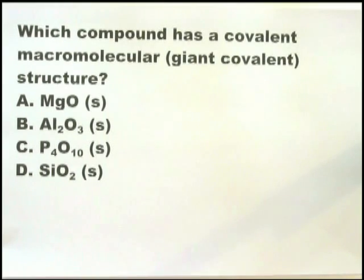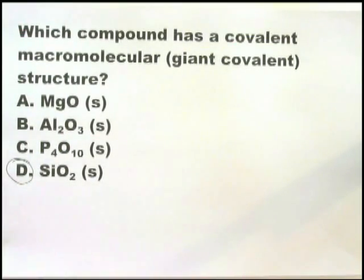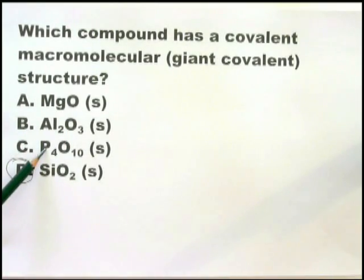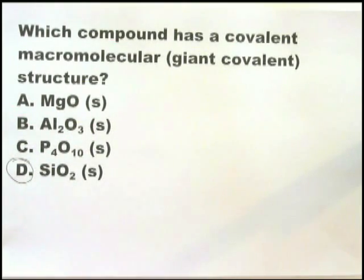When you look through these four options, you have to immediately realize that silicon dioxide is the giant covalent structure, or macromolecular structure. The others are ionic or simple covalent. There are a few structures you're expected to recognize immediately as covalent macromolecular or giant covalent: silicon dioxide, diamond, graphite, and fullerene — or buckyballs as they're sometimes called. There are also some others you may come across, such as polymers.